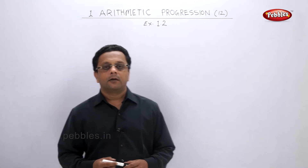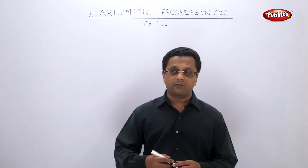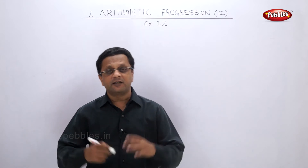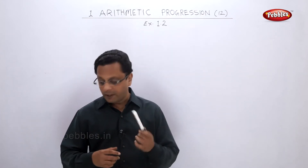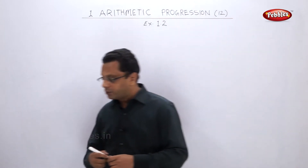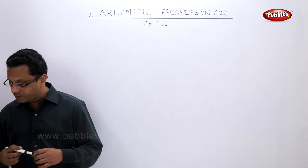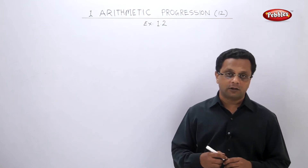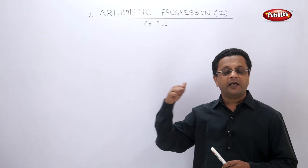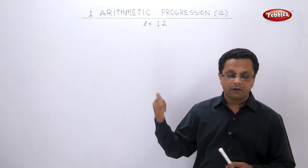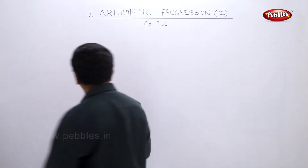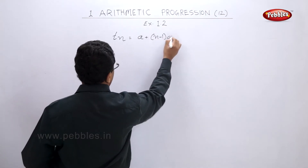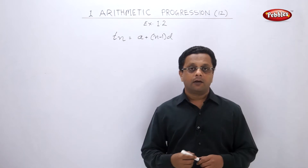Let us see some examples where we have to find out the nth term — the 8th, 9th, 10th term, whatever it is. Just before that, I want to tell you that if d is 0, then this sequence is a constant sequence, because when d is 0 the first number replicates n number of times. I hope you remember the formula: tn = a + (n−1)×d.